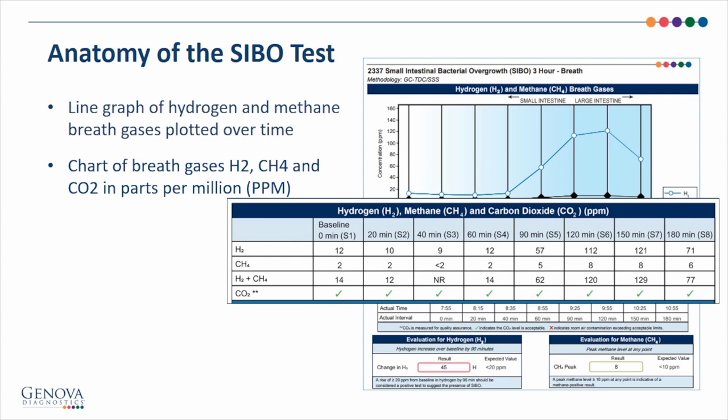Under that, we have a chart that displays the results of the hydrogen, methane, and carbon dioxide gases over time. The top row shows the hydrogen results, under that the methane results, then the hydrogen plus methane results. In the past, it was common to report a positive result for SIBO with a rise in the combined sum of hydrogen and methane. Now, the focus has shifted more towards interpretation of the individual gases. We have the sum here for clinicians who wish to see it displayed in this manner. The fourth row shows the carbon dioxide level as a measure of quality assurance. The green check marks indicate the carbon dioxide levels are acceptable. If the levels are unacceptable, there will be a red X, and other breath gas results cannot be reported for that sample.